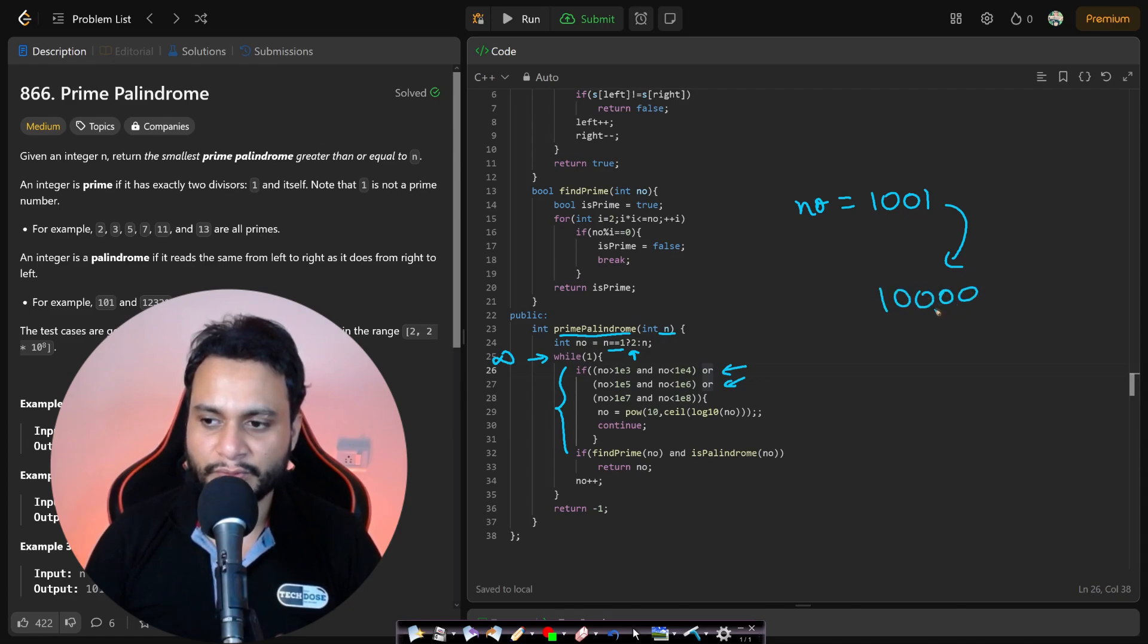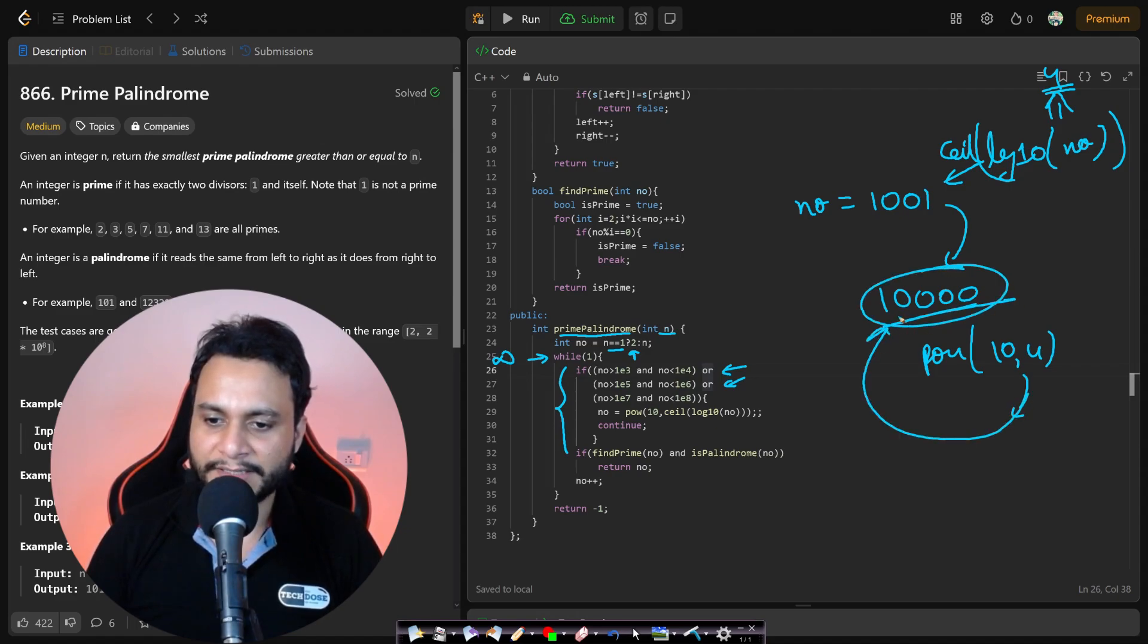The nearest one will be 10 to the power of 4. How do we do that? We find the log base 10 of this given number, which gives you 3 point something. Apply a ceiling on this and it gives you 4. We'll take power of 10 comma 4, which gives 10 to the power of 4. This is the nearest next digit number. Then we continue the processing.